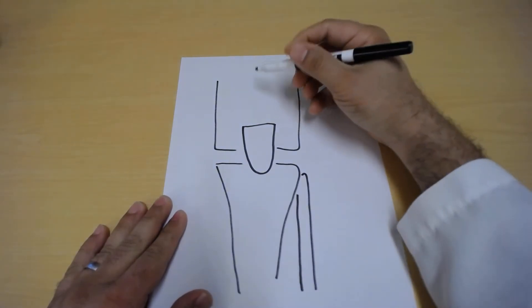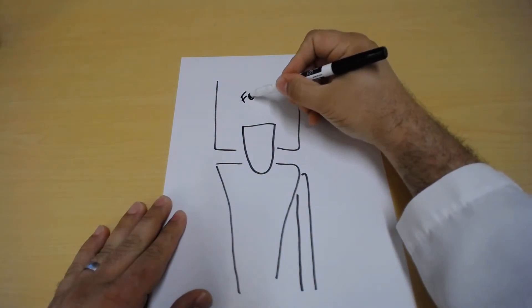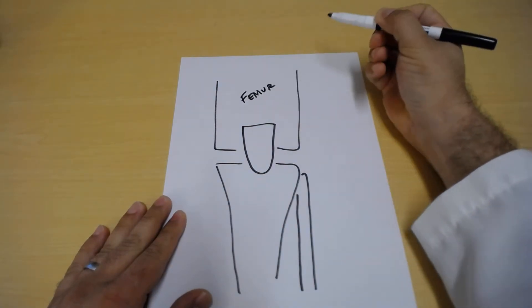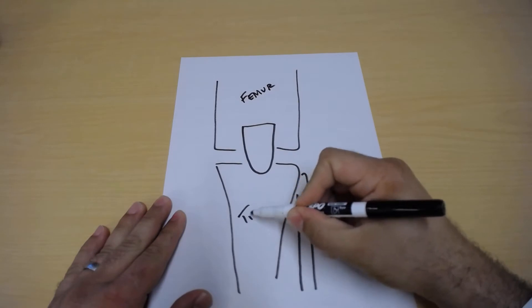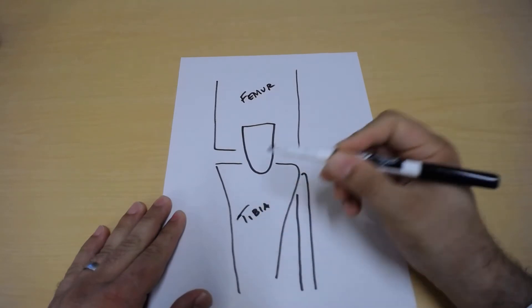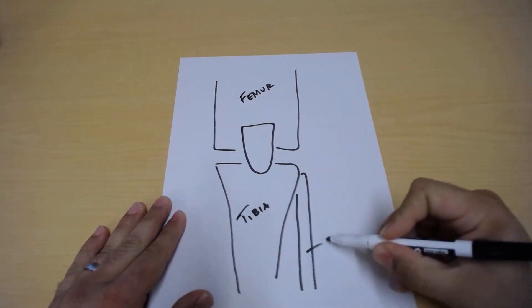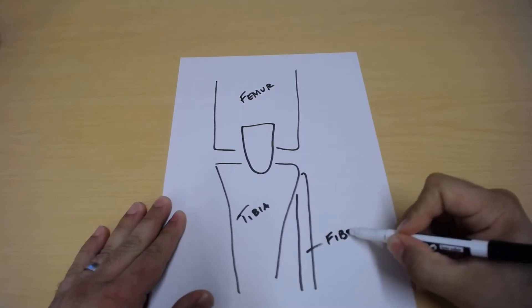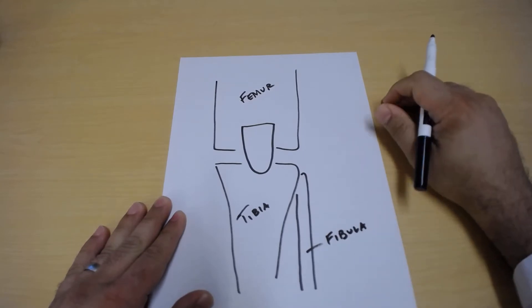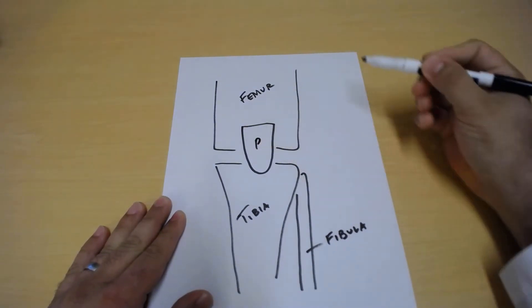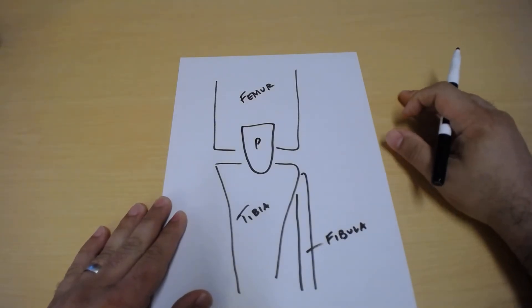So this is a front view of the knee. We're going to talk about the femur which is this bone up here, this is your thigh bone. We have the tibia, your shin bone. Down here on the outside of the knee you have the fibula and then right in the center you have your patella or also known as your kneecap.